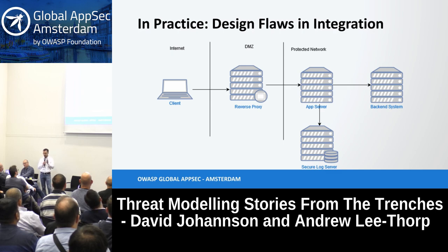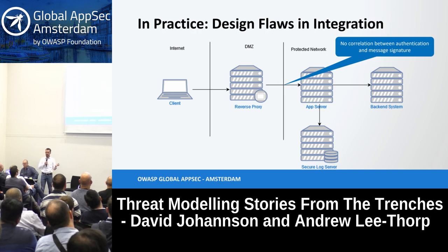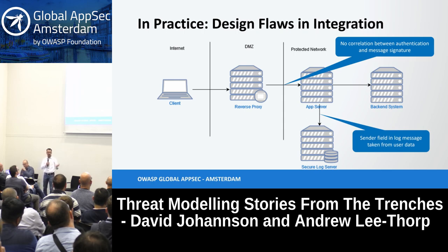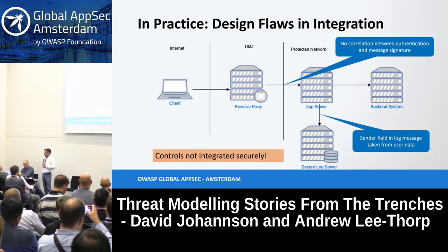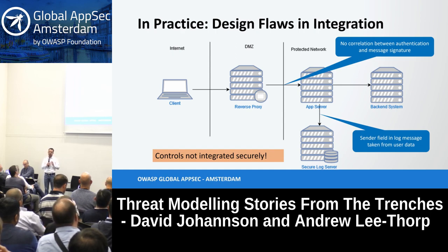The controls themselves were strong, but the integration was flawed. With the reverse proxy, the authentication at the transport layer had no correlation whatsoever with the signature verification at the message layer. They did not check that the same entity that had authenticated was the same entity that had signed the transaction — so those could be two completely different entities. To make it worse, when logging who sent the message in the audit log, they took the sender from a field in the actual payload rather than from the authenticated session.